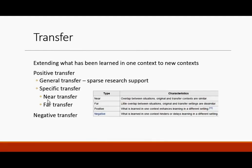Transfer is extending what has been learned in one context to a new context. In terms of specific transfer, let's think about near and far transfer, and also positive and negative transfer. Near transfer means there is overlap between the original situation and the transfer context — they need to be similar. Far transfer means very little similarity between situations.